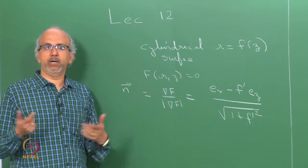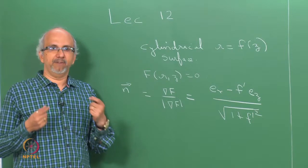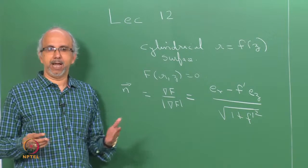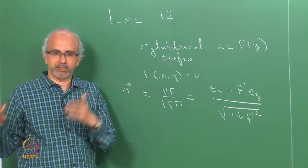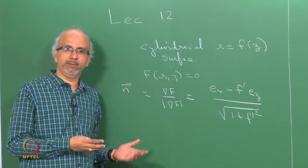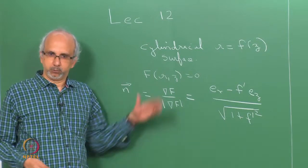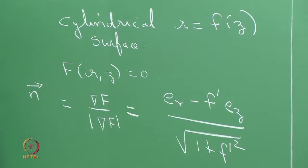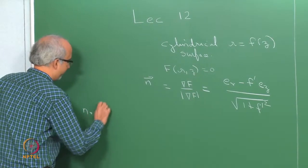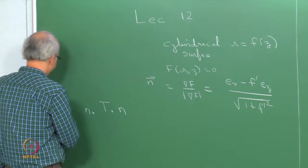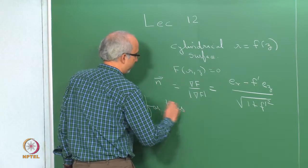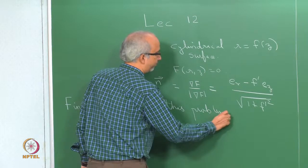When working out a problem you need to evaluate n·T·n to get the normal stress. I just wrote it as a formula, but when working in cylindrical or rectangular Cartesian coordinates you need to be able to evaluate it. So let us do one case of evaluation using this cylindrical surface problem to illustrate. Our job is to find n·T·n for this problem.